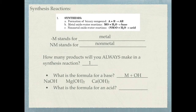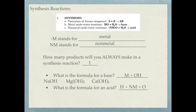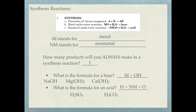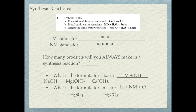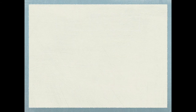For an acid, the formula is hydrogen followed by a non-metal and then often followed by oxygen — not always. For example, H2SO4 is an acid with hydrogen followed by a non-metal followed by oxygen. For carbonic acid, you've got hydrogen followed by the non-metal carbon followed by oxygen. For 1A and 1B synthesis reactions, you just cross your charges to create your product. For 1C, you balance as you go.